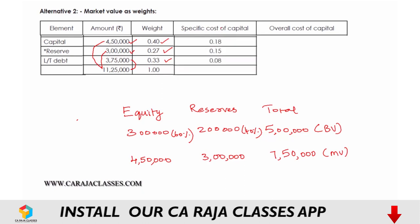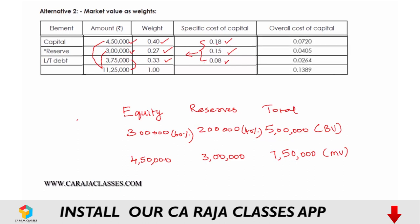The specific costs are: 18% for equity capital, 15% for reserves, and 8% for long-term debt. We had to split the equity figure precisely because of this distinction in cost rates — otherwise we could have simply used 7 lakh 50 thousand as a single figure. Multiplying: 0.18 × 0.40 = 0.0720, 0.15 × 0.27 = 0.0405, 0.08 × 0.33 = 0.0264. Adding these: 0.0720 + 0.0405 + 0.0264 = 0.1389. The weighted average cost of capital based on market value is 13.89%.